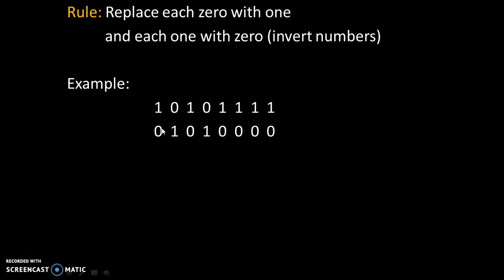So, 1 is replaced with 0, 0 with 1, 1 with 0, 0 with 1, 1 with 0, 1 with 0, 1 with 0. And this new inverted number is called as 1's complement of the previous number.